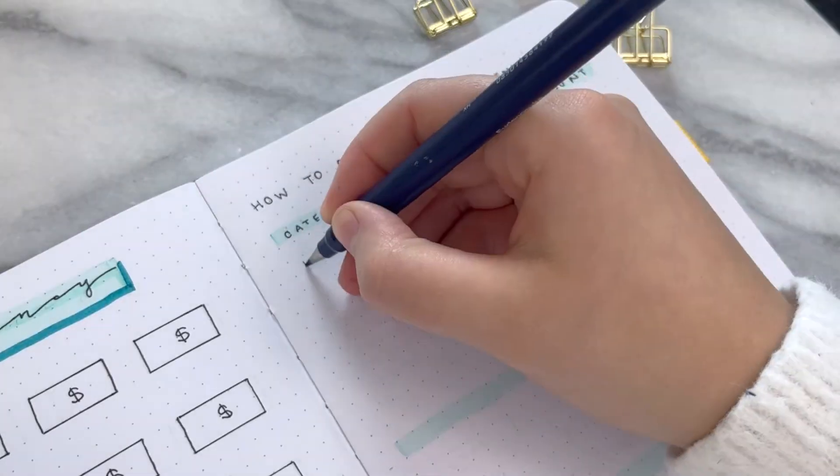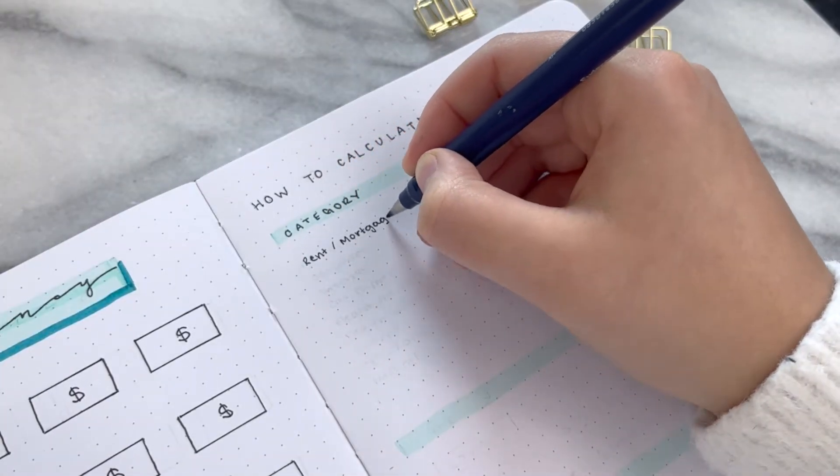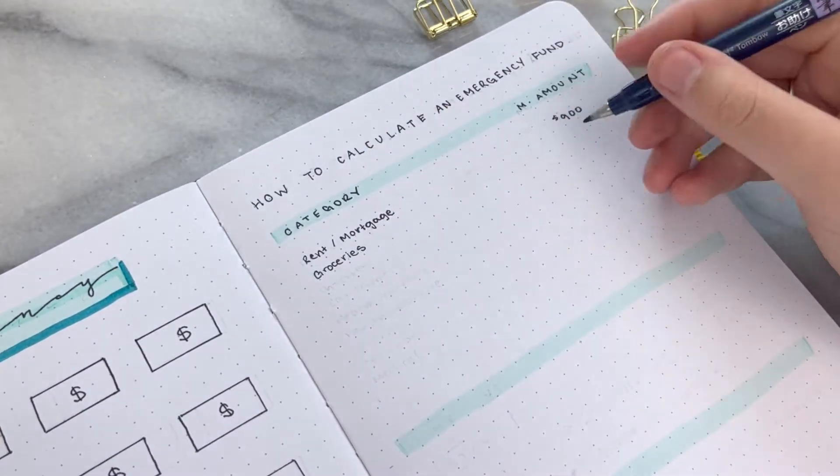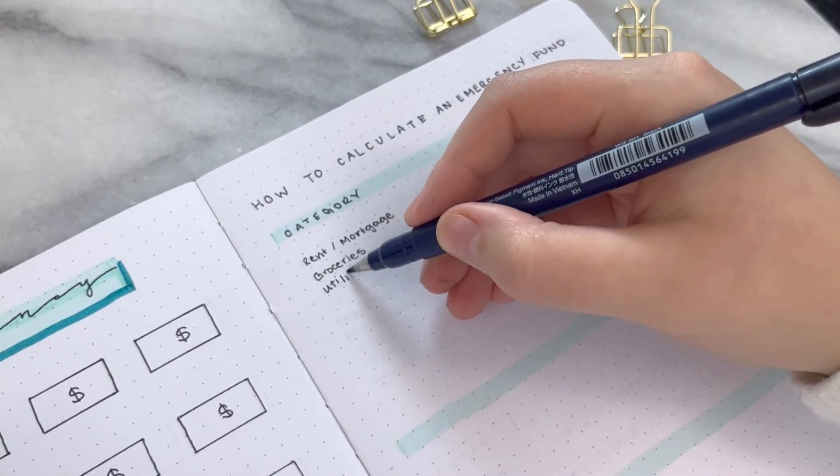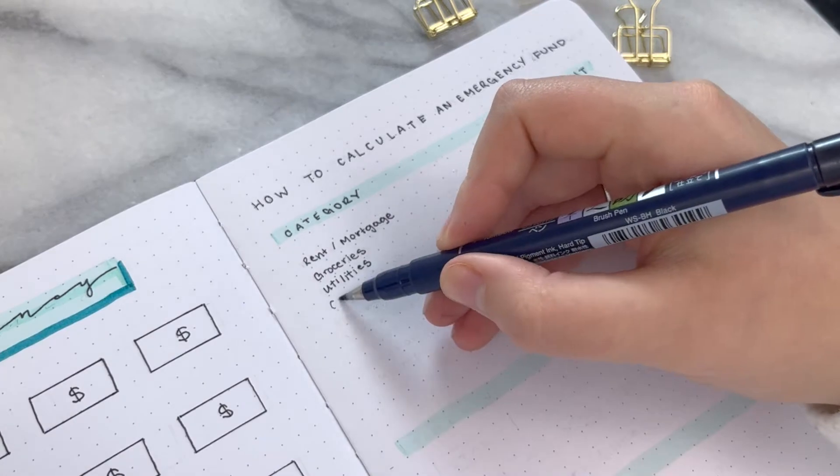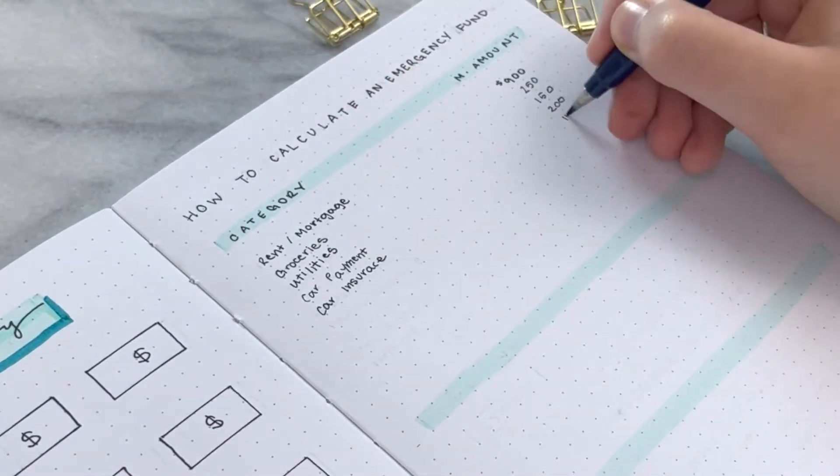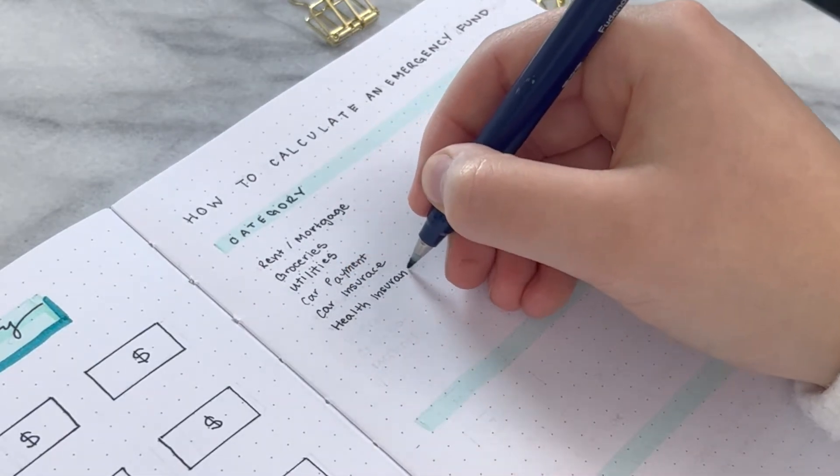How to calculate an emergency fund, I would recommend going back through any bank statements that you have, credit card, if you have multiple credit cards, multiple bank accounts, pull all of those out and go through and see all of the necessary expenses that you would need to have in your life to be able to live month to month.